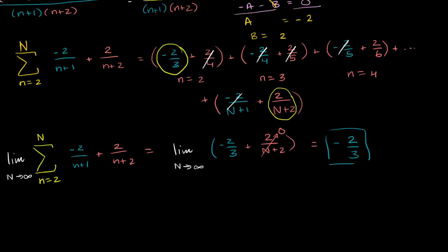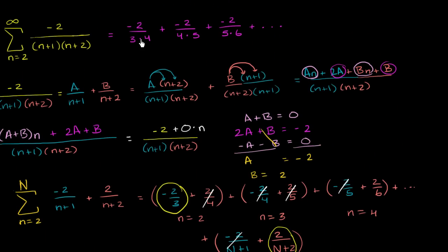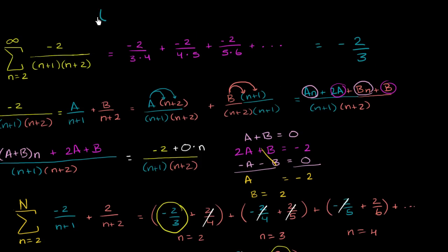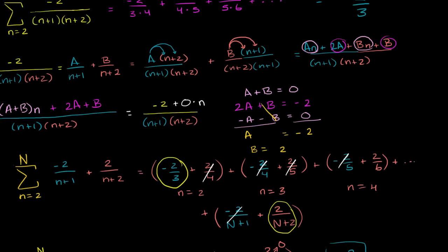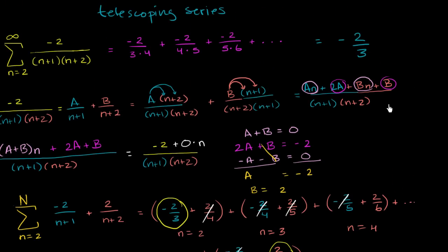We were able to figure out that the sum of this infinite series equals negative 2/3. This type of series is called a telescoping series. A telescoping series is one where, if you take its partial sums, terms cancel out in this pattern, leaving just a fixed number of terms at the end. It was a little hairy, but a pretty satisfying problem.